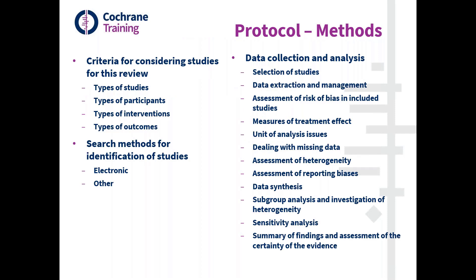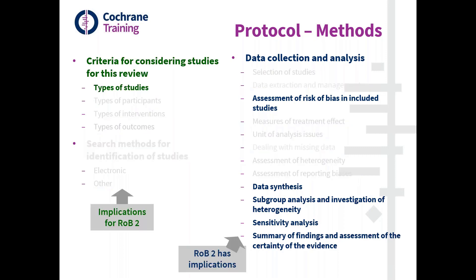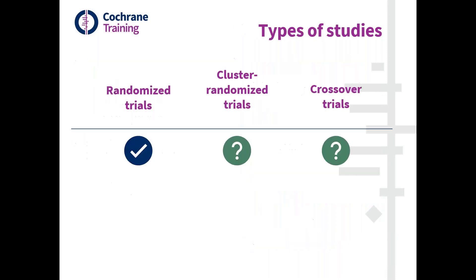Now I'm going to talk about the aspects of Risk of Bias 2 you need to include in your protocol. These slides will be available afterwards. Here is a list of the 18 headings covering methods in a Cochrane protocol. For RoB 2 methods, we need to think about several sections of the protocol — not just the section headed 'assessment of risk of bias.' Some sections have implications for using RoB 2, and in others RoB 2 is directly included, which hasn't been the case for previous iterations of the tool.